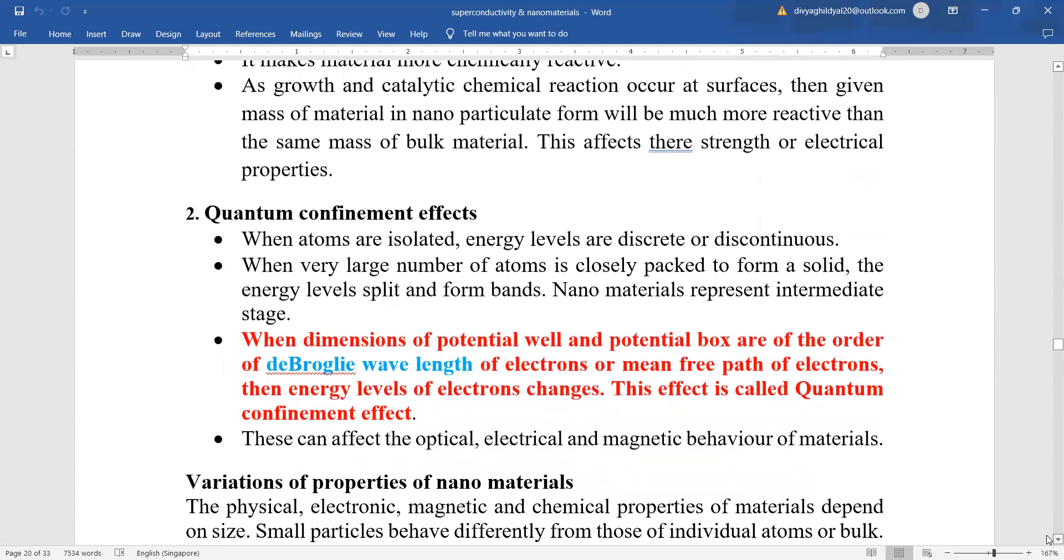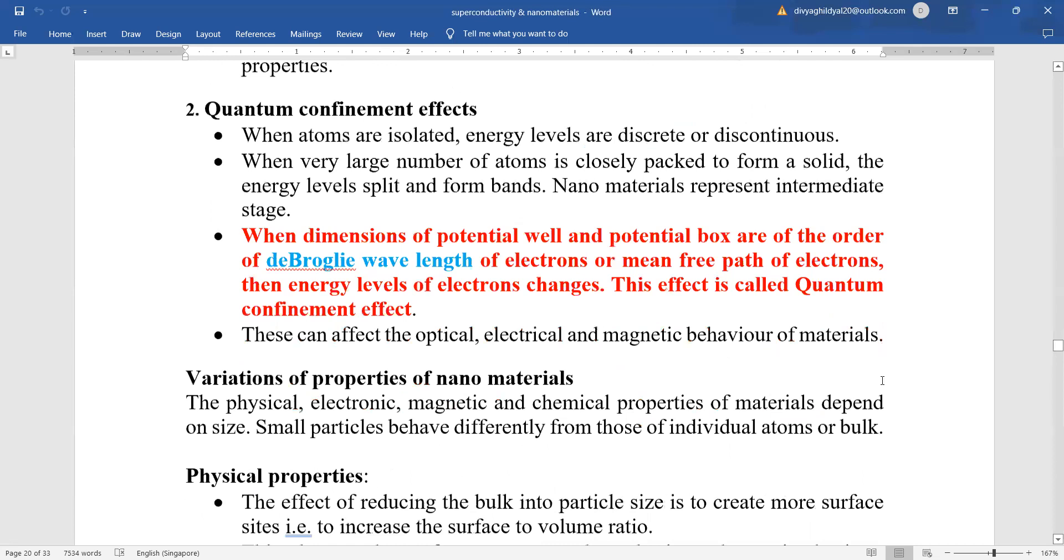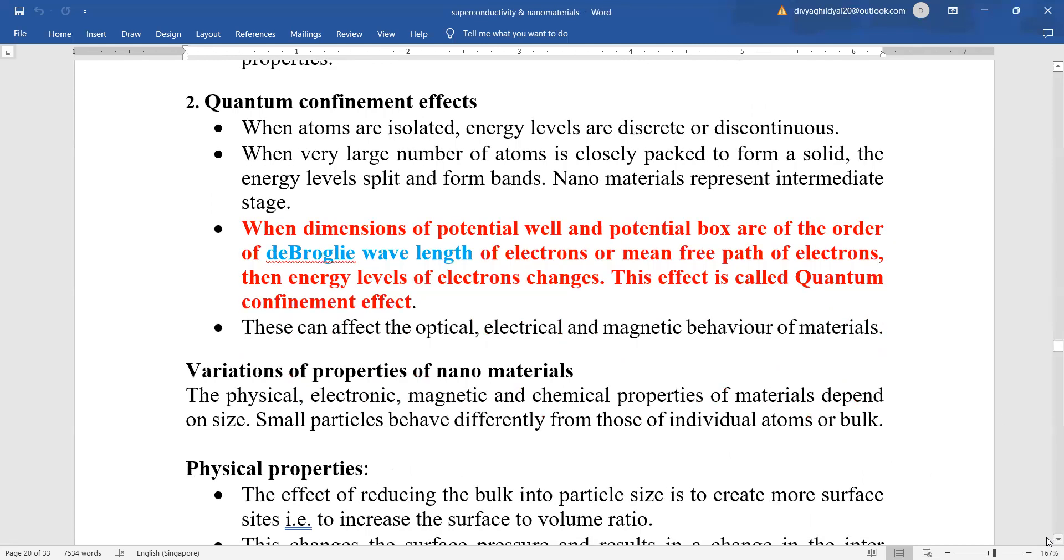Quantum confinement. When dimensions, atoms are isolated, energy levels are discontinuous. When large number of atoms is closely packed to form a solid, the energy level splits and bands are formed. Nanomaterials represent intermediate state. Quantum confinement means that when dimensions of potential well or potential box come under the order of the de Broglie wavelength of electrons or mean free path of electrons, then energy levels of electrons changes. This is known as quantum confinement of the nanoparticles.